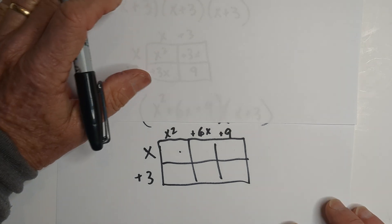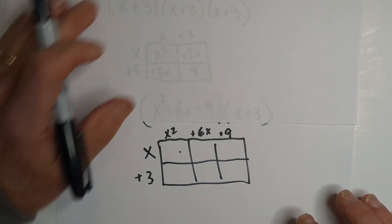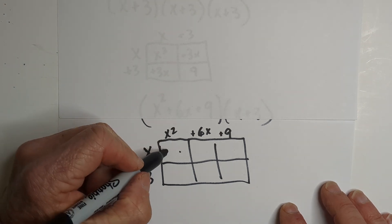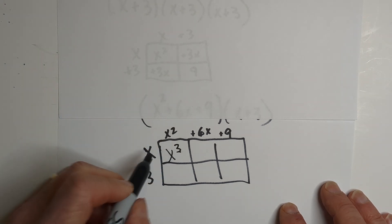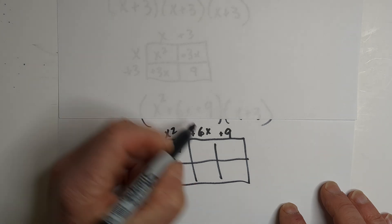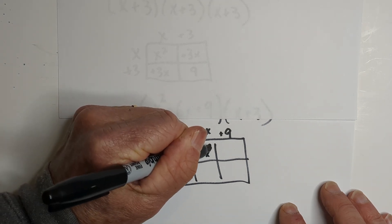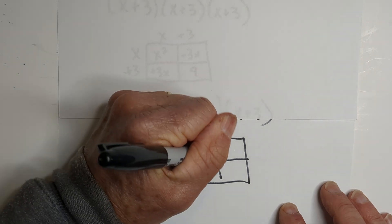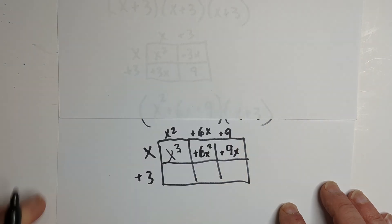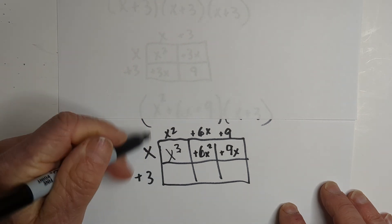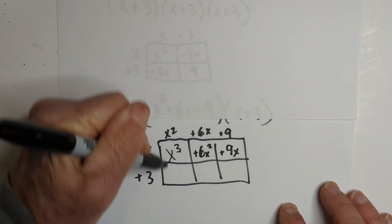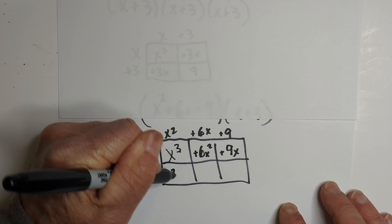Now I'm going to move this down so it's a little less distracting. So now we just start multiplying. We have x cubed here. Now x times 6x is a positive 6x squared, and then x times a positive 9 is a positive 9x.